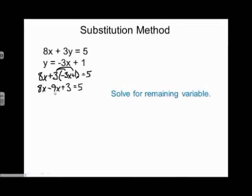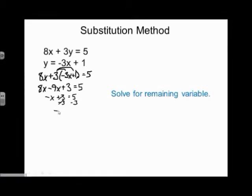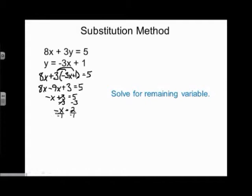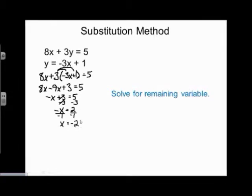We combine like terms: 8x minus 9x gives negative x, so negative x plus 3 equals 5. Bring the 3 to the other side by subtracting it from both sides, leaving negative x equals 2. To get rid of the negative, we divide by negative 1 on both sides. Negative divided by negative is positive, so x equals negative 2.